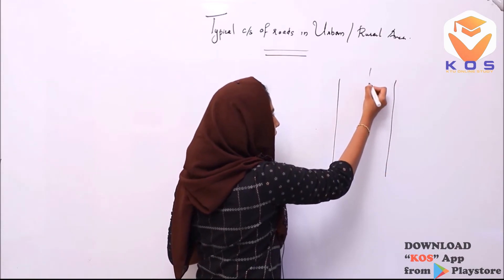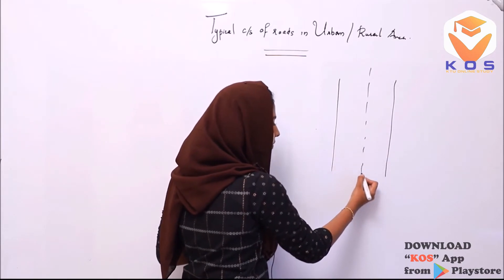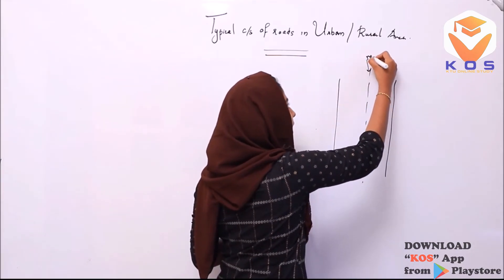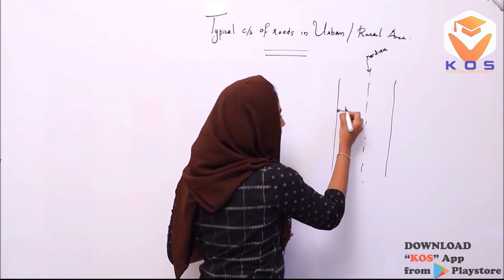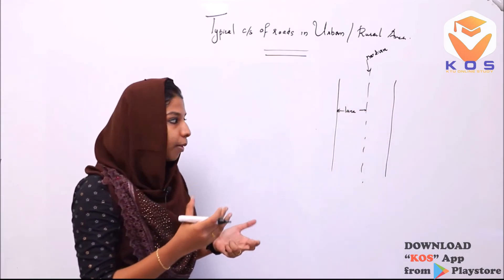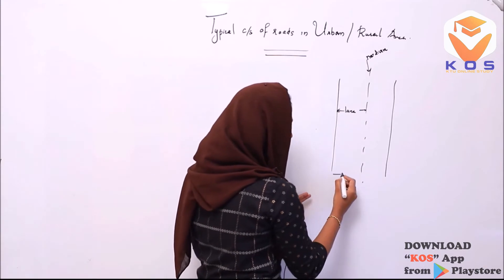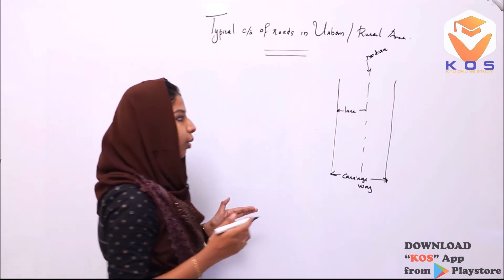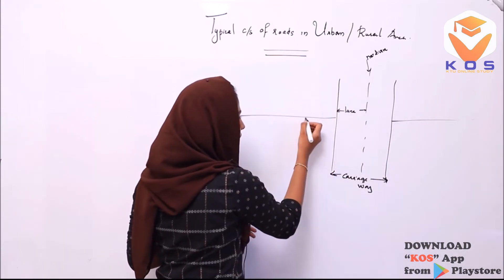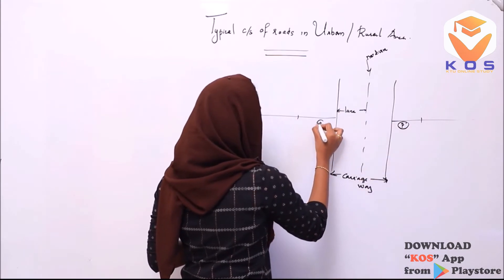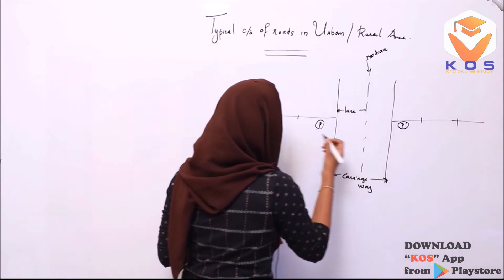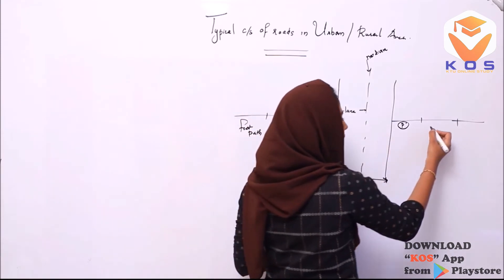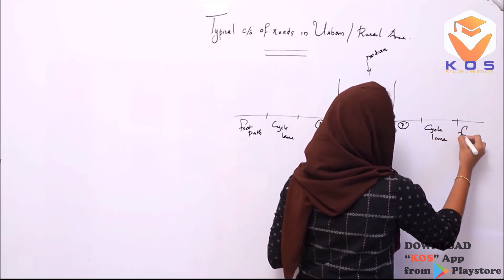Here is our road. At the center, there is a median strip. If you have two lanes, you can divide them and add a median strip. Then there are the lanes — single line and double line. On both sides of the road, we have parking, cycle lane, and footpath.